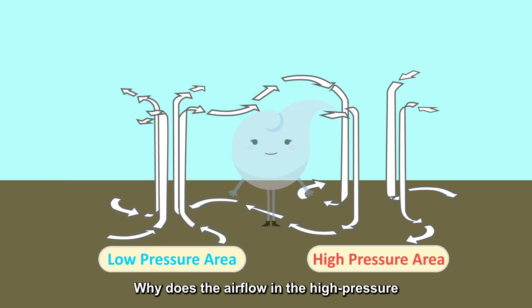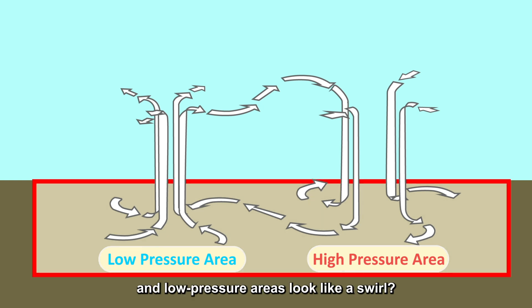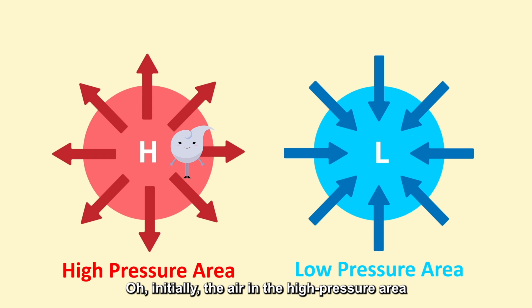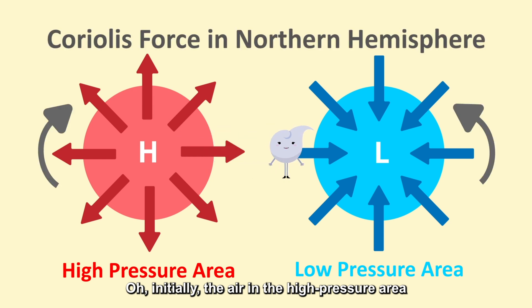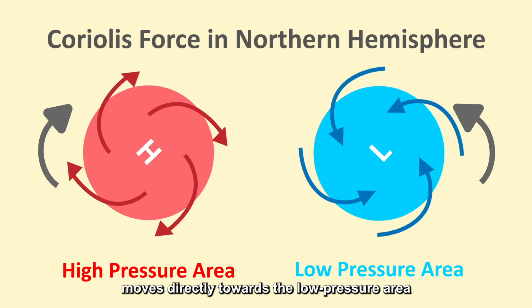Why does the air flow in the high-pressure and low-pressure areas look like a swirl? Initially, the air in the high-pressure area moves directly towards the low-pressure area. But because of the influence of the Coriolis force generated by the rotation of the earth, it becomes a swirl-like movement. So, how do we measure air pressure?